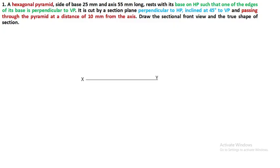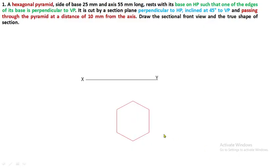Now we will see the solution of this problem. Mark the XY line — there is no specific distance, you can maintain any distance for this hexagon. Being the section plane inclined to VP, after drawing the section plane only we can say which is the remaining portion and what is the removed portion. Until that, draw the entire hexagon using thin lines and give notations for all corners A, B, C, D, E, F.